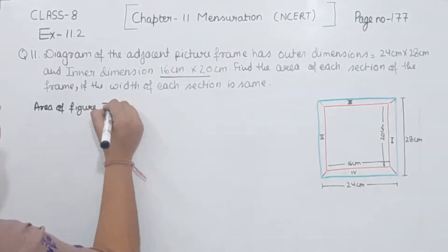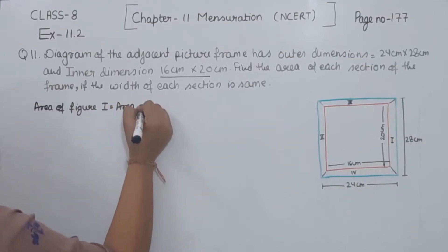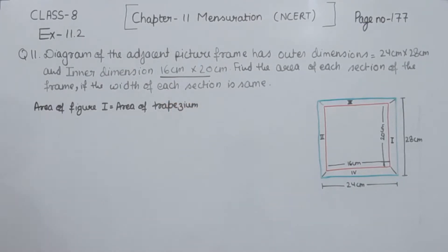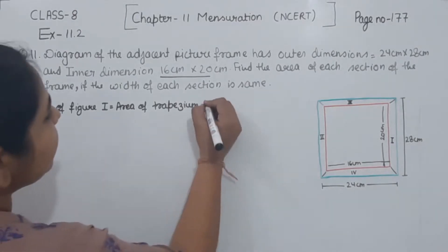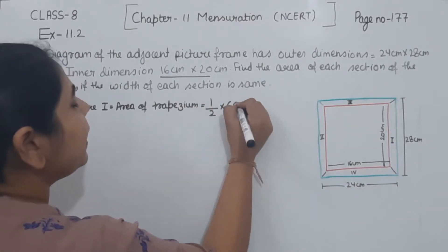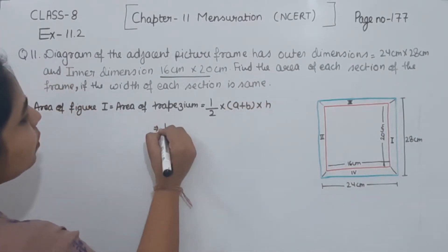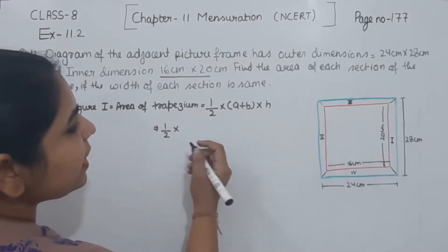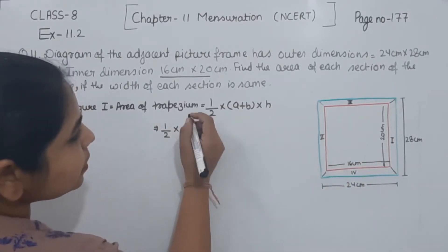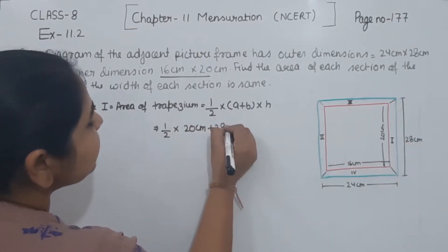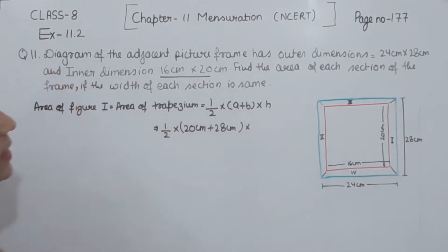Area of figure 1 is equal to the area of a trapezium. The formula we are having is: half multiplied by (a + b), multiplied by height. Here, a is 20 cm, b is 28 cm, and the height is the difference between both of them, which is 4.